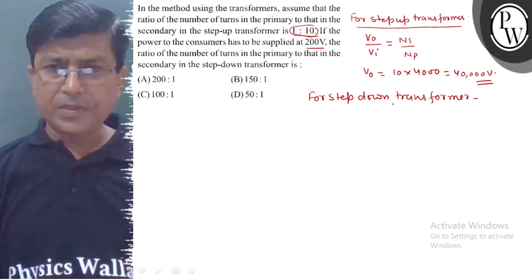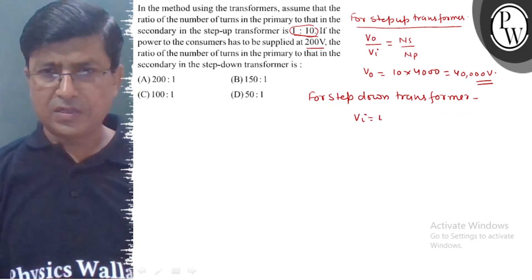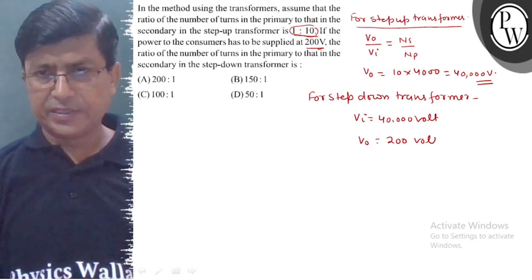Step down transformer v input is 40 thousand volt, v output is 200 volts.